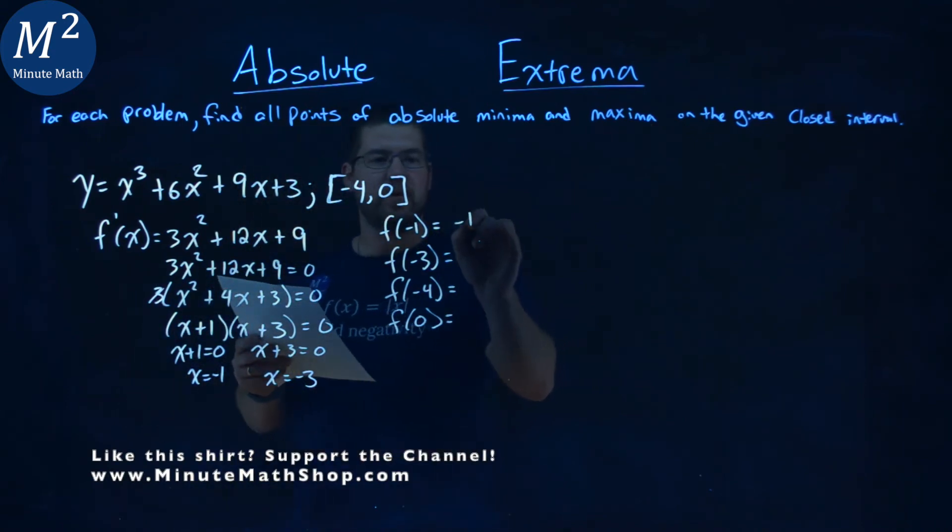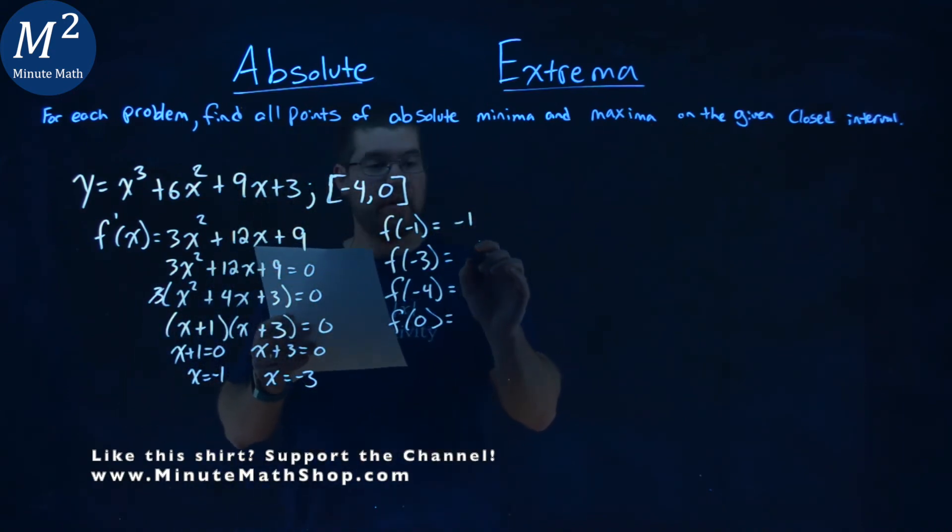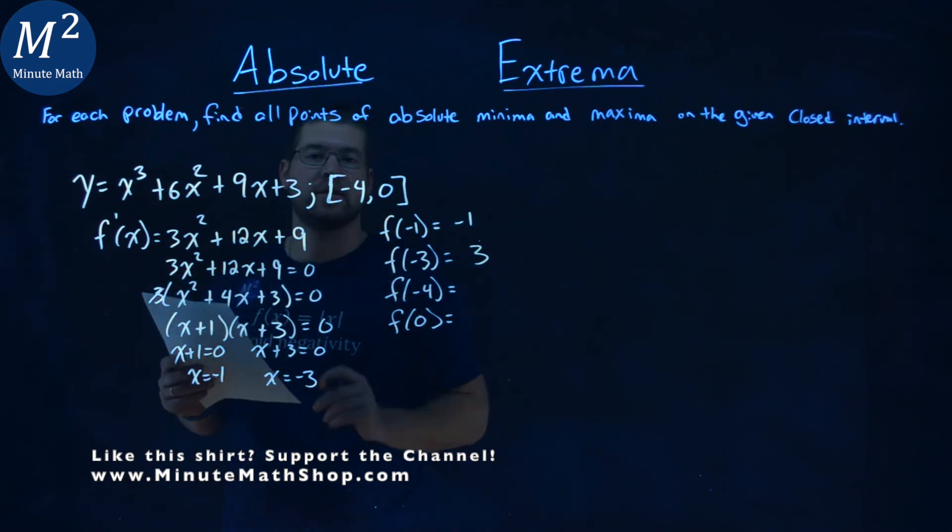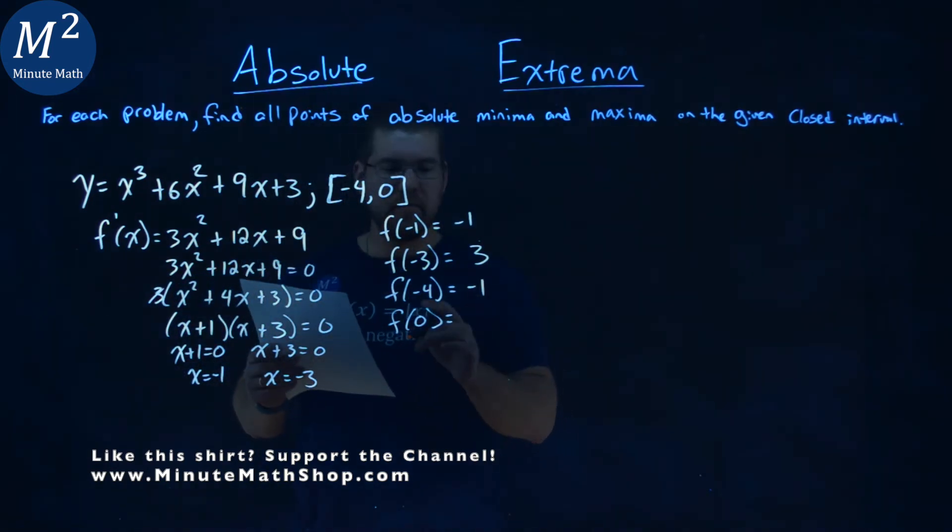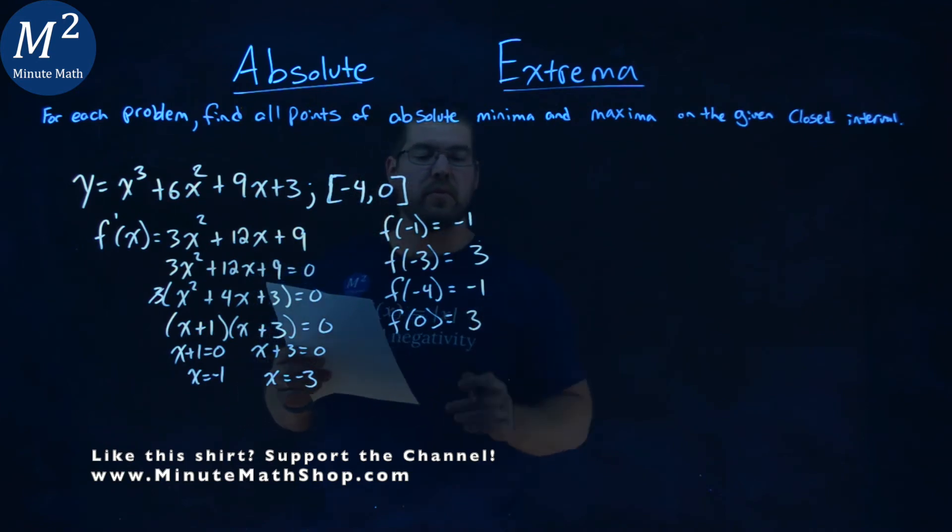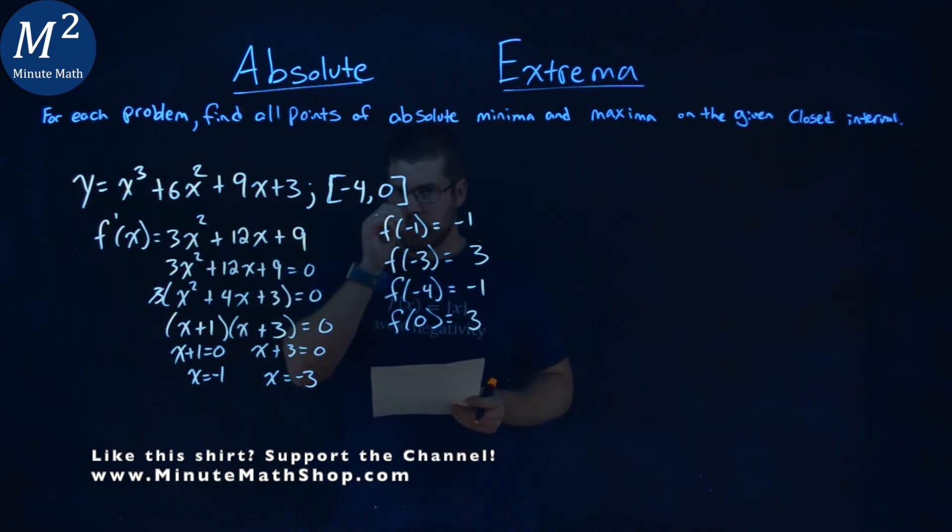f of negative 1 came out to be negative 1. f of negative 3 came out to be positive 3, again, plugging into our original equation. f of negative 4 is negative 1, and f of 0 is positive 3. Notice we have repetition here.